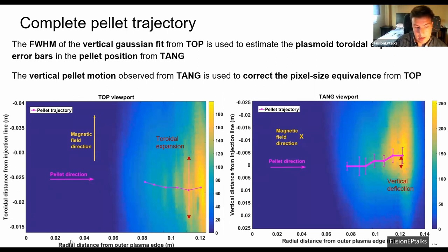Here we have the toroidal, vertical and radial positions of the pellet at an instance of time. And again, thanks to the double bundle, we can make some final corrections of the calculation. And the full width half maximum of the vertical Gaussian fit from top is used to estimate the plasmoid toroidal expansion. And this is used to estimate error bars in the pellet trajectory from tangential. And similarly, this vertical pellet deflection observed from tangential is used to correct the pixel size equivalence in the top viewport.